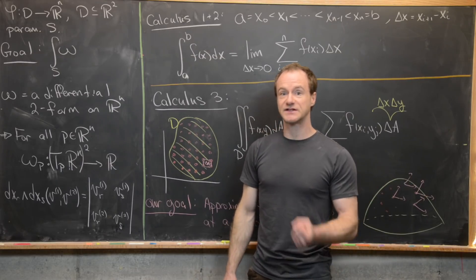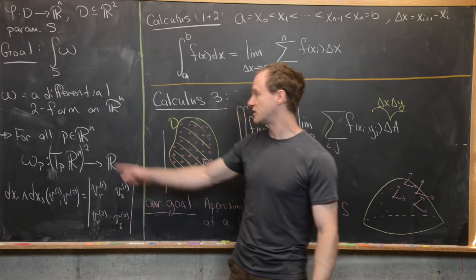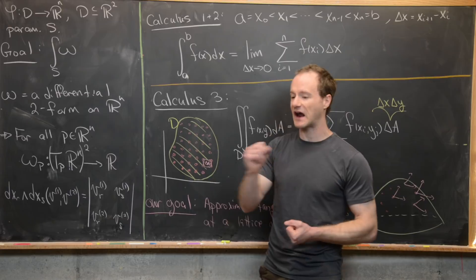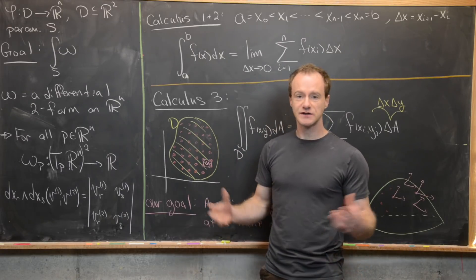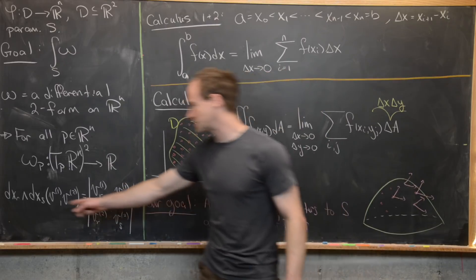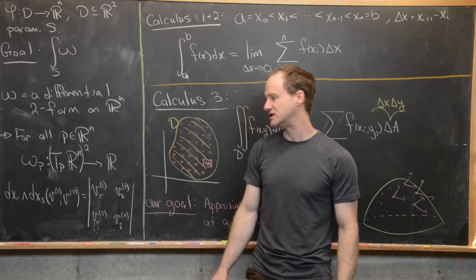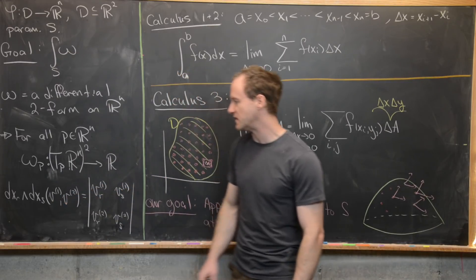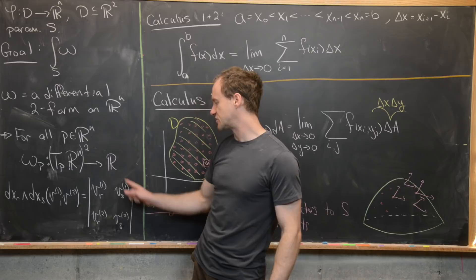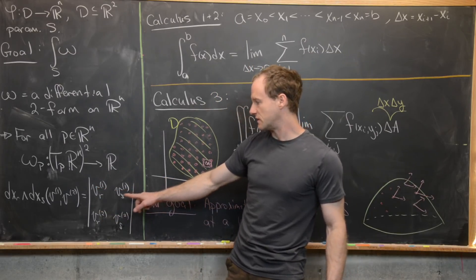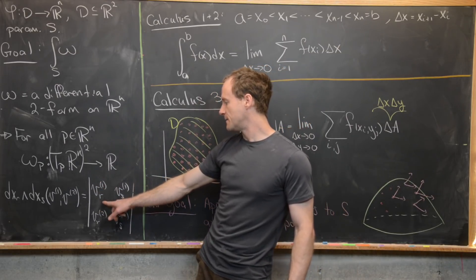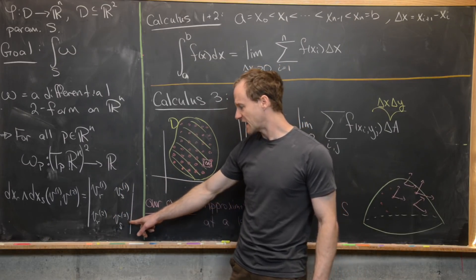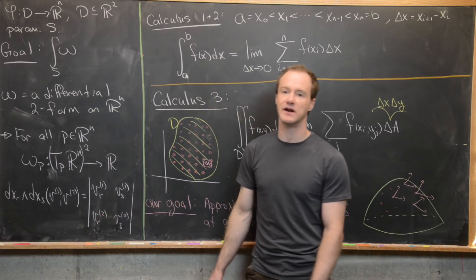Recall this two-stage evaluation: first you plug in a point, then you plug in two tangent vectors, and finally you get a number out. Also recall that two-forms are spanned by objects of the form dxᵣ ∧ dxₛ, with the following action: if you plug in vectors V¹ and V², you get the determinant of the 2×2 matrix whose first row is the r-th and s-th components of V¹, and whose second row is the r-th and s-th components of V².